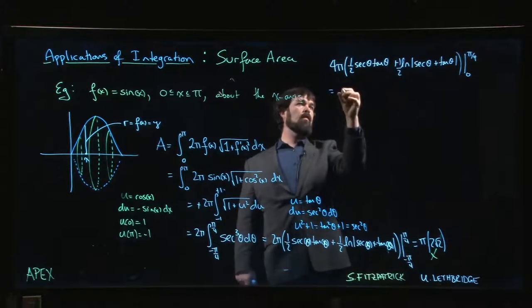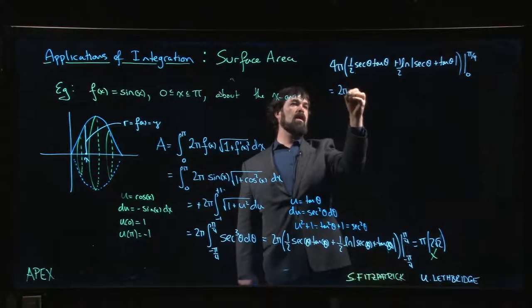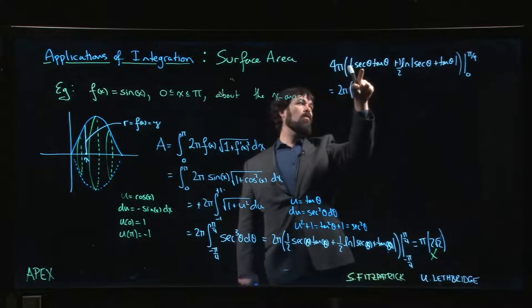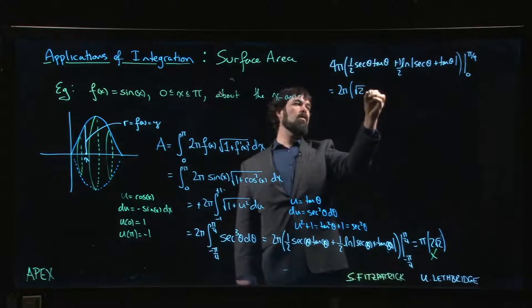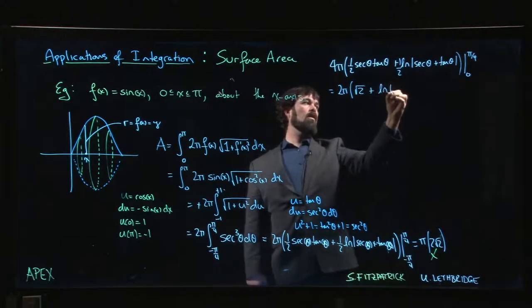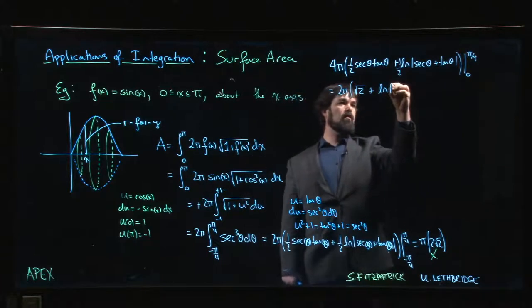Then we get, canceling the one-half with the four pi, we have two pi. Secant pi over four is root two, tan of pi over four is one, so we have root two plus the natural log of root two plus one.